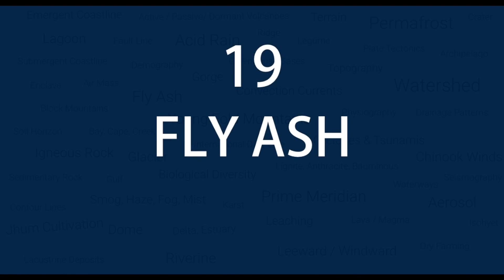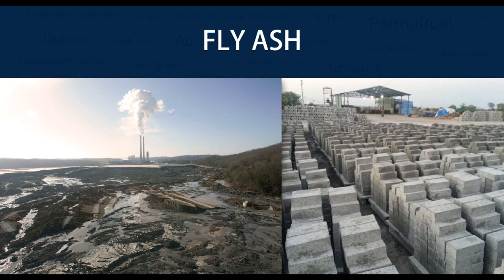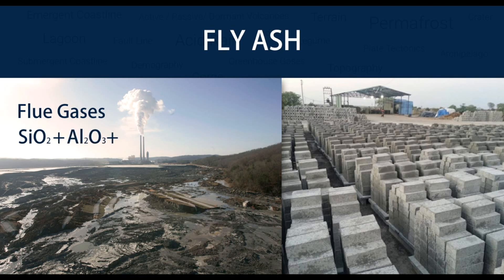Number 19 — Fly Ash. Fly ash is a coal combustion product composed of fine particles that are driven out of the boiler with the flue gases. Fly ash includes substantial amounts of silicon dioxide, aluminium oxide and calcium oxide. It is reused in making bricks, concrete and embankments.